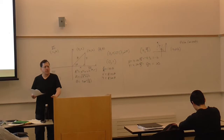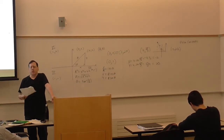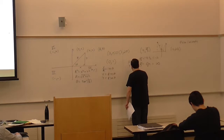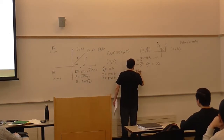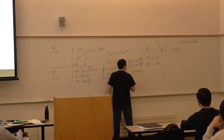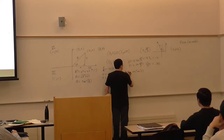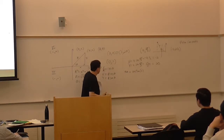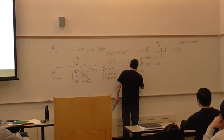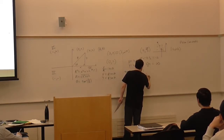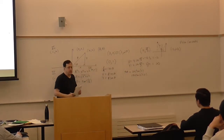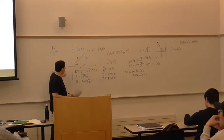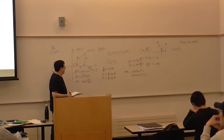A little side note for computer science people: most computer languages have an inverse tangent or arctan function — arctan(x). But they often also have a second function that deals with this quadrant problem. I've seen it called arctan2, where you give it both x and y coordinates, and it will get the sign correct for you — at least putting it within the first 2π angle.